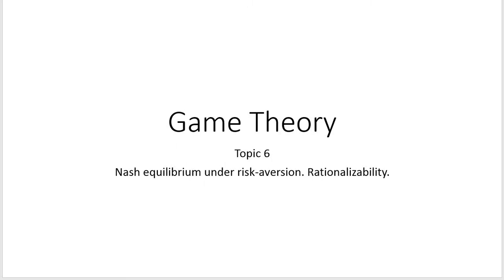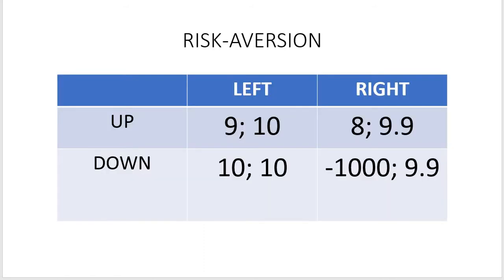This video is devoted to discussing the appropriateness of using Nash equilibrium as a solution concept under the assumption of risk aversion, and explaining how rationalizability can help to achieve Nash equilibrium. Please look at this table and tell if you were a column player whether you would choose up or down. If you have the same degree of risk aversion as the majority of people, then probably you would choose up instead of down.